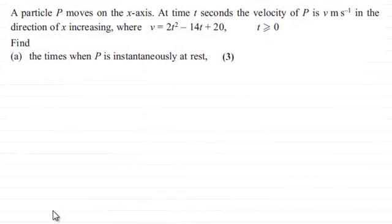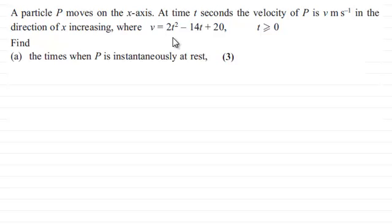Hi there. For this question we're told that a particle P moves on the x-axis, and at time t seconds the velocity of P is v meters per second in the direction of x increasing, where v equals 2t squared minus 14t plus 20, and t is greater than or equal to zero. We've got to find the times when P is instantaneously at rest, for three marks.